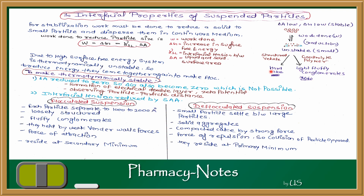To make a stable suspension, first we have to lower the particle size so that the dispersion space is continuously available in the dispersion medium. We have to work to reduce the particle size, but reduction leads to an unstable system.